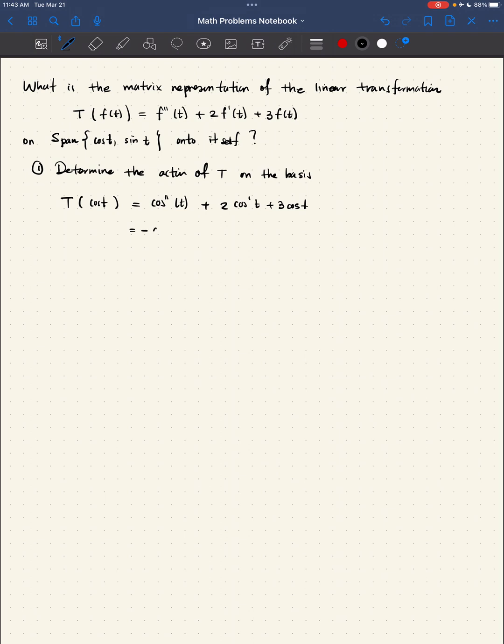So this is negative cosine of T minus two times sine of T plus three cosine of T. Now, what I want to do is combine things. This becomes now two cosine of T minus two times sine of T. It's important that I keep the order because now I see that this corresponds to the coordinates of this vector under this basis in that order.